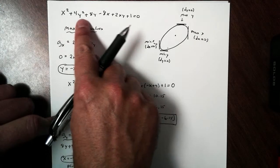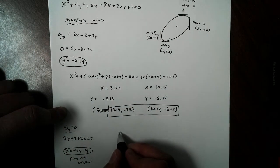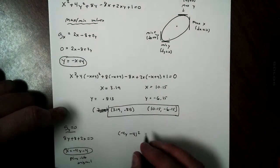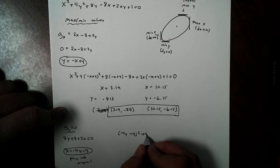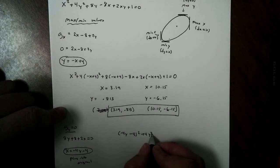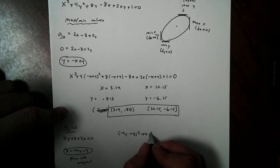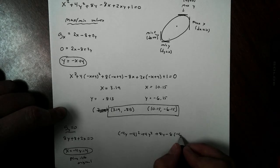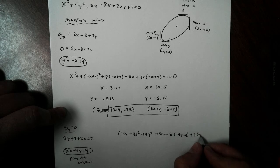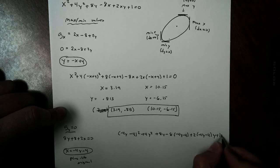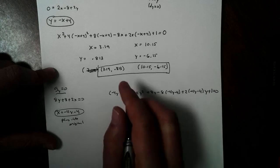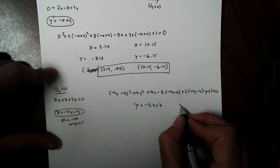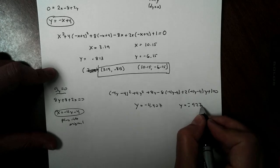We're going to plug it in here. We would get negative 4y minus 4 squared plus 4y squared plus 8y minus 8 times negative 4y minus 4 plus 2 times negative 4y minus 4 times y plus 1 equal to 0. I already did the dirty work for you. I solved those. You get the y values negative 4.407 and negative 0.927.